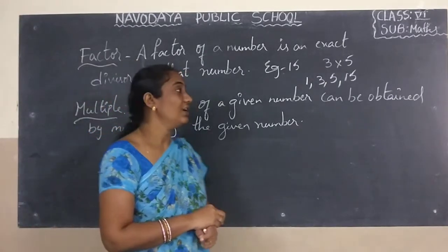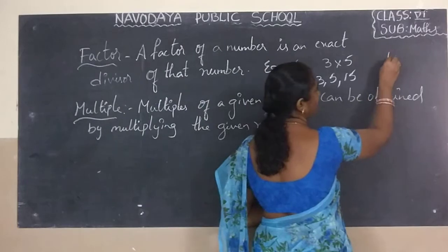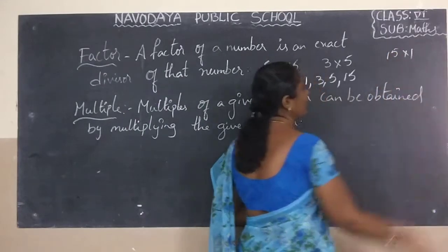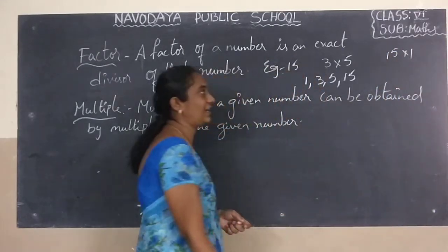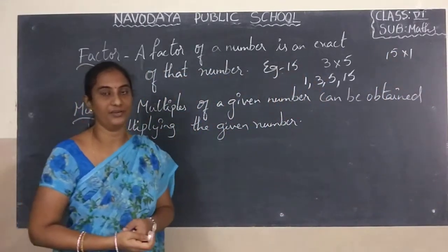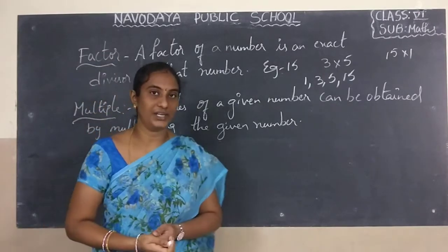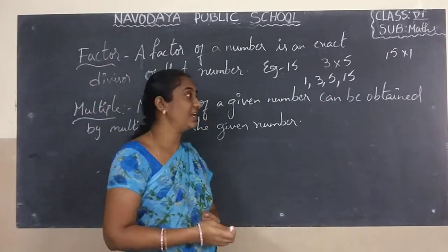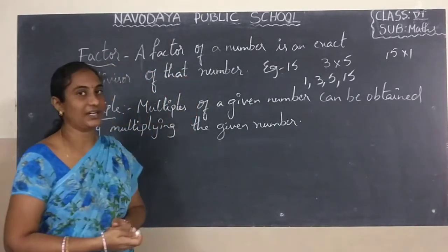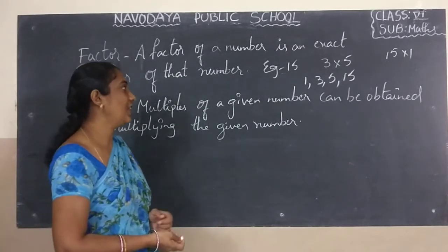We can write 15 as 15 into 1. So 1 is a factor of every number, and every number has a factor which is itself.